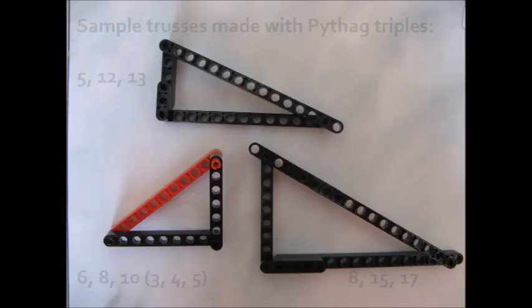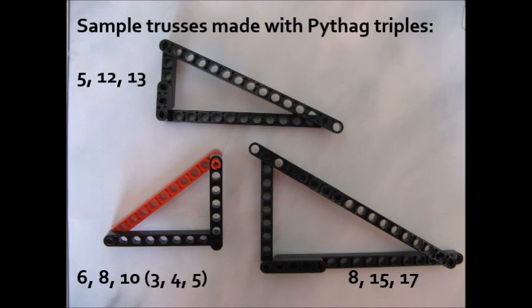And as a bonus, if you need to make bigger trusses, you can double the triple — so instead of 3, 4, 5, it becomes 6, 8, 10, and so on. Pretty cool, right? Here are some sample trusses that I've made using Pythagorean triples.